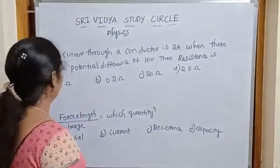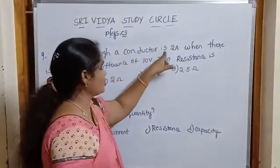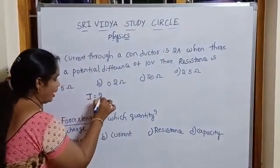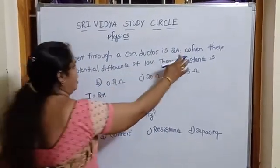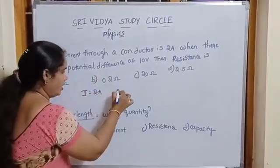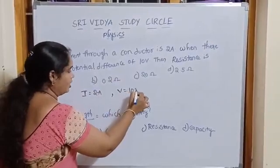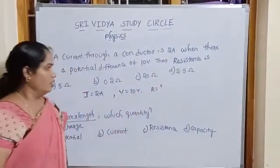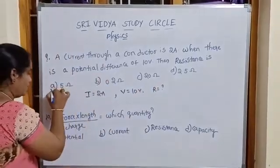Next one. A current through a conductor is 2 amperes. Amperes means I is equal to 2 amperes. When there is a potential difference of 10 volts, V is equal to 10 volts, then R is equal to question mark. First, the given option is 5 ohms.